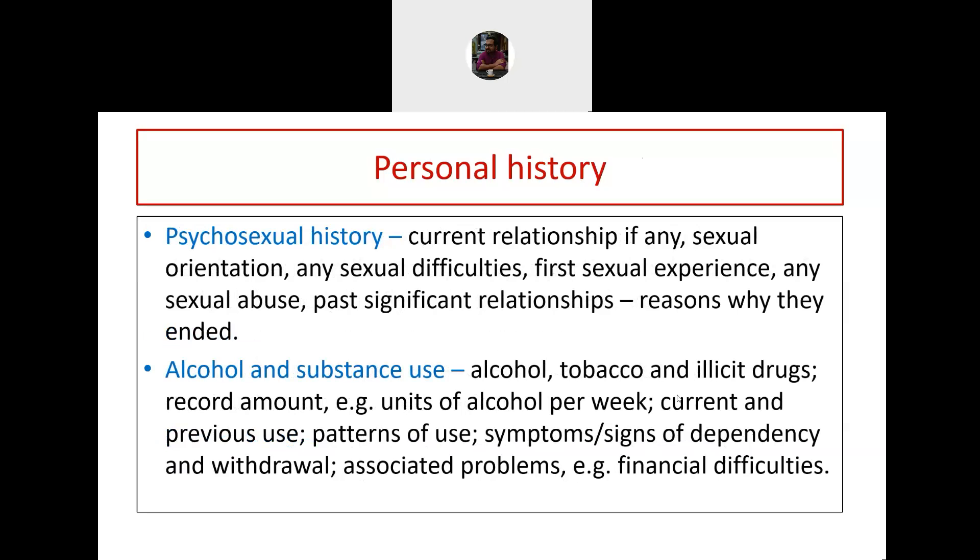Psychosexual history is very important. You ask about current relationship if any, sexual orientation, any sexual difficulty, first sexual experience, any form of sexual abuse, past significant relationships and reasons why they ended. Because there is a taboo in discussing sexuality, you might reserve these questions for the last part of the interview when you have gained confidence of the patient. Ask about alcohol and substance use: alcohol, tobacco and illicit drugs. Record the amount taken, whether any symptoms or signs of dependence or withdrawal have happened, and whether there is any associated problem like financial difficulty.